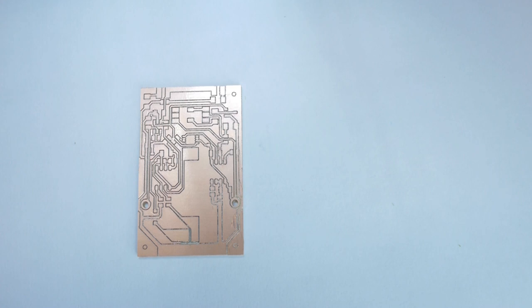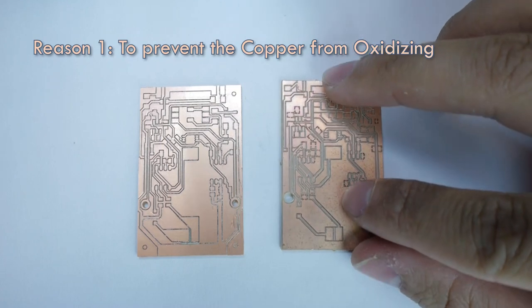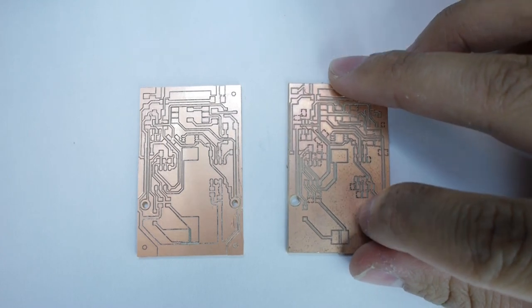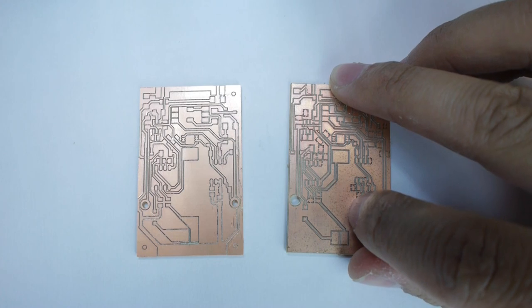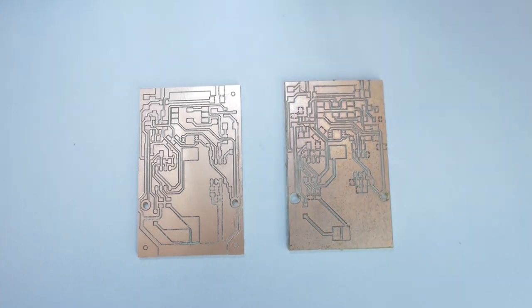The first reason is that solder mask will help prevent the copper from oxidizing. I have this board that has been exposed to air for quite some time and you can see that the copper has darkened and there's a rough corroded texture to this. Solder mask will prevent this corrosion from happening and will extend the board lifetime.